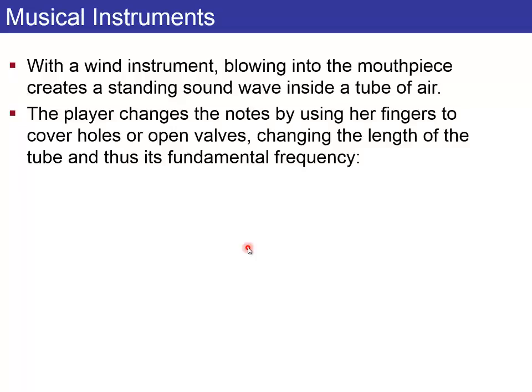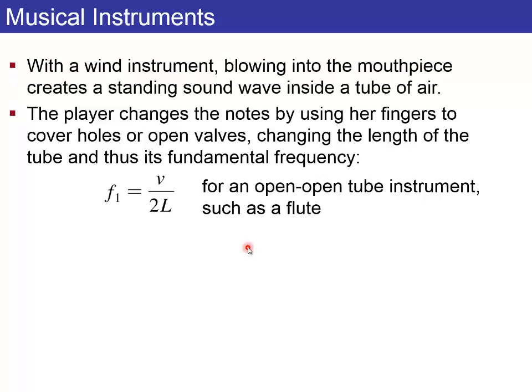So with a wind instrument, you blow over the mouthpiece and that creates a standing wave inside the tube of air. And you can change the length of the tube, effective length of the tube, by putting your fingers over the holes. Every time there's an open hole, that's like an open end. So like a flute, for example, this L is the distance between the nearest open hole and the other end of the flute. And V is the speed of sound here inside that tube.